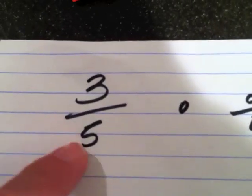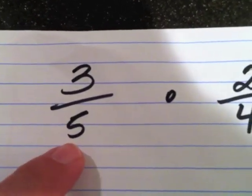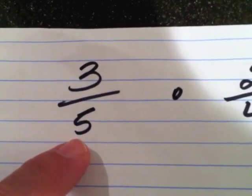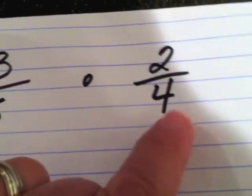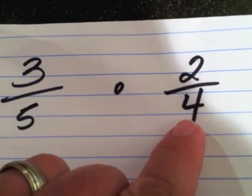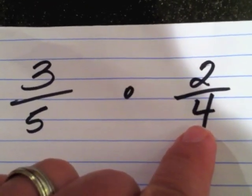Notice the first fraction had a denominator of five — when there were five pieces — and the second one had a denominator of four, so it dropped by one.